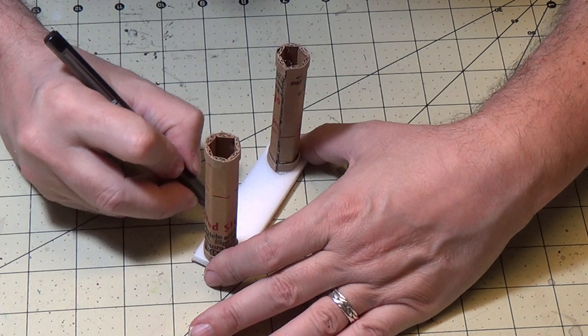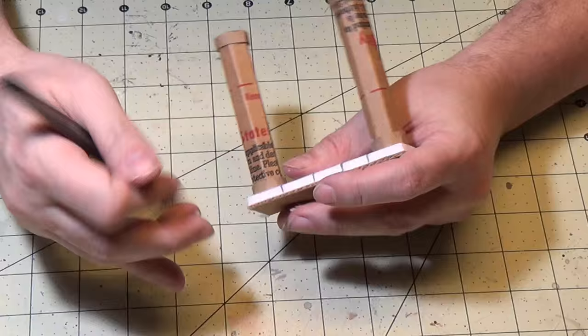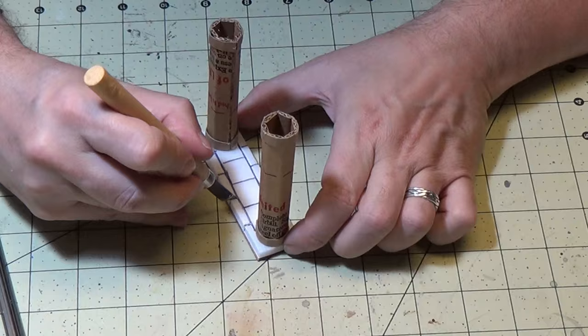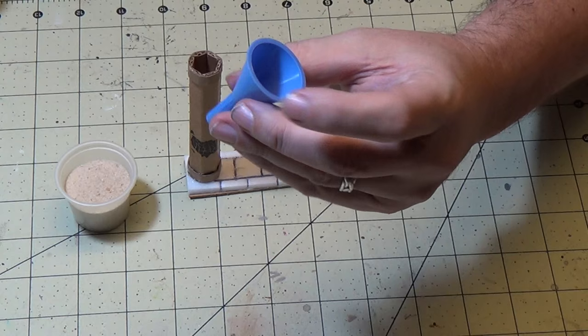The reason I want to use the foam core is I want to put some detail on the base here with some stone work. Just press the ball point pen right into the foam core and you get really nice details there. Now I'm going to use the carving tool to push in a little bit more, get some deeper detail.